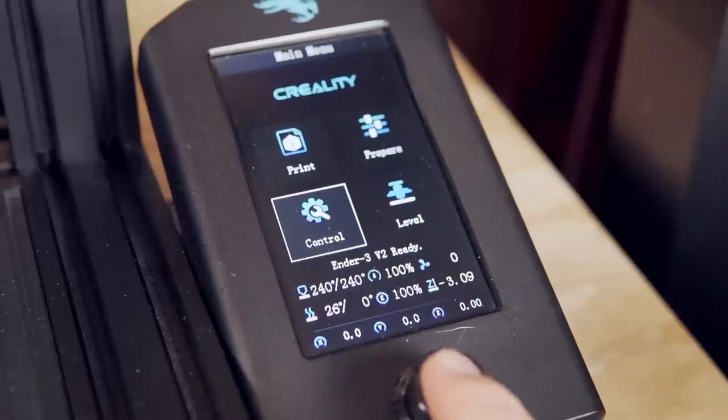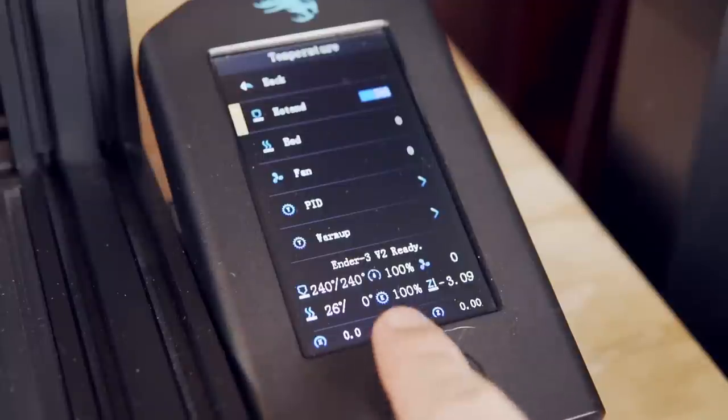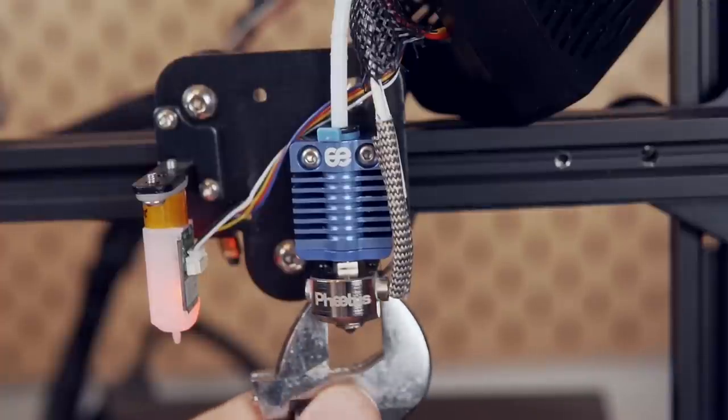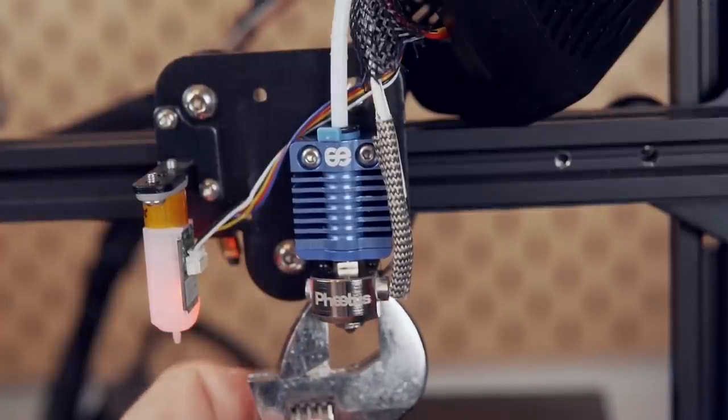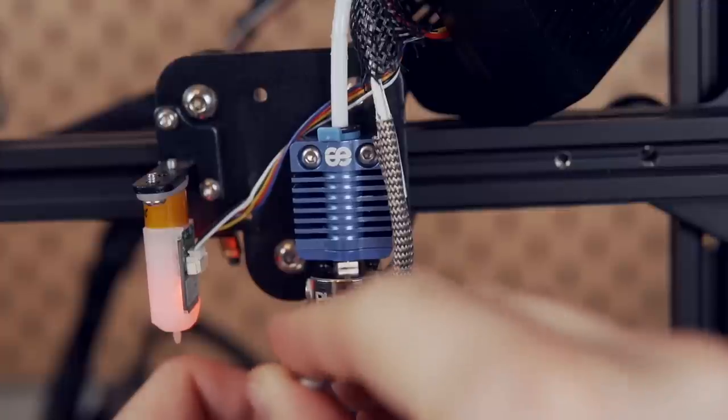Now we need to hot tighten the nozzle. For this I maxed out the temperature on my hotend, which is 260 celsius—it's firmware locked and I'll probably adjust that later on. Let the hotend climb to its max temp and then take something like an adjustable wrench to grab onto the heat block and then something small like a spanner wrench to then tighten the nozzle.